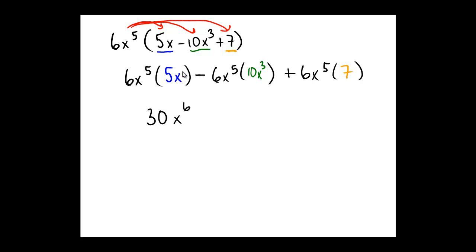Remember, when there's no exponent, that means 1 copy of x. 6 times 10 here would be 60. Then we have 5 plus 3 many copies of x. That's x to the 8th.